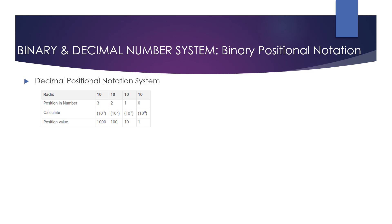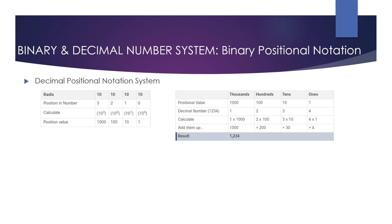The decimal notation is based on 10, so the radix for this system is 10. Row 2 gives us the position in the number, starting from right to left: zero for the first position, one for the second, two for the third, and so on. These numbers also represent the exponential value used to calculate the positional value. Row 3 calculates the positional value by taking the radix and raising it by the exponential value of its position. Row 4 gives us the positional value representing units of thousands, hundreds, tens, and ones. Based on that logic, we get the result for the decimal number 1234.